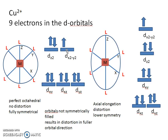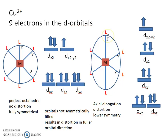The d_z² orbital is fuller than the d_(x²-y²), which means there is more repulsion in the z direction. As a result of this greater repulsion in the z direction, we observe elongation in the z direction, meaning the bond length between the metal and the donor atom of the ligand becomes longer. Because of this elongation, the amount of repulsion decreases, and therefore the orbitals oriented in the z direction — the d_z² and d_yz — have lower energy.